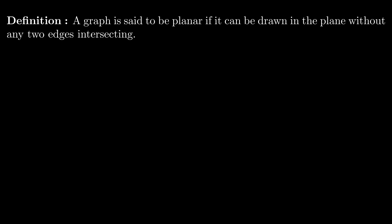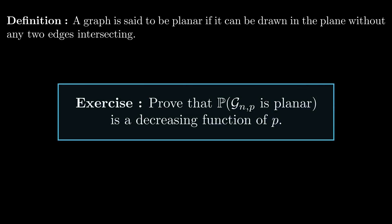Again, I'll give a small exercise to apply these same ideas. A graph is said to be planar if you can draw it in the plane without any two edges intersecting. What I'm asking you to do is to prove that the probability that the graph G_{n,p} is planar is a decreasing function of p. You should try it, it's really satisfying.